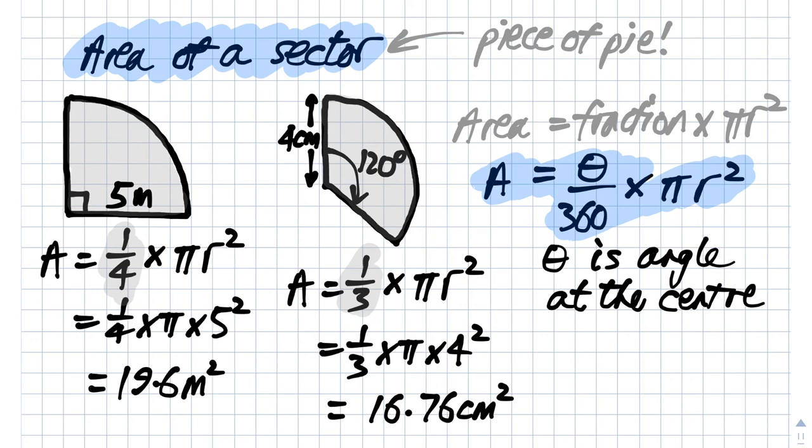So basically what we're doing in finding the area of a sector—it's a fraction of the full circle. In this case 120 over 360, in this case 90 over 360 is a quarter. So it's a fraction times the area of a full circle.